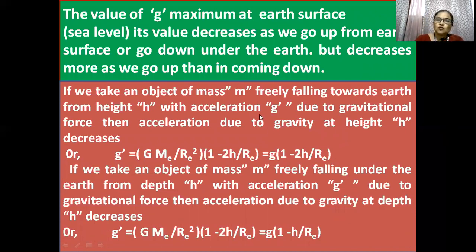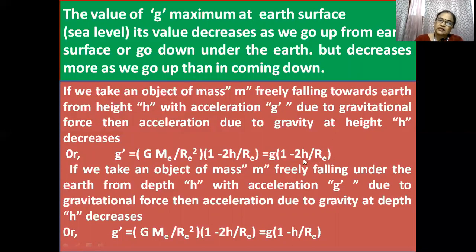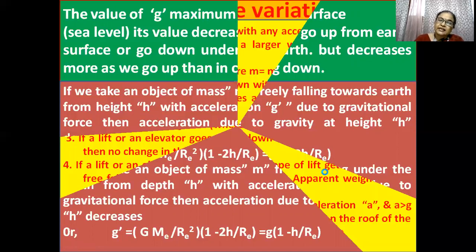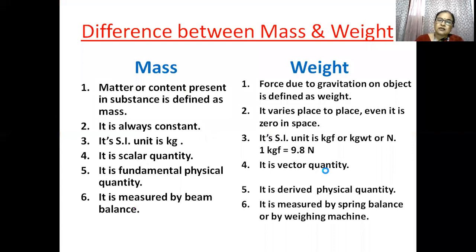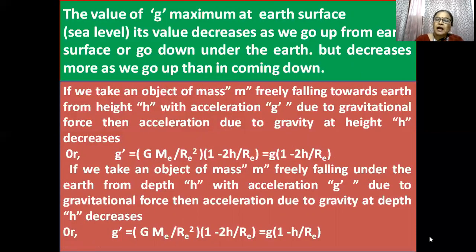The amount of decrease in g equals minus g — where g is the gravitational acceleration at the earth surface — times h over re. So the g value at the earth surface will decrease by h over re times of g. If we go up it increases, but going into the earth it becomes minus h by re.